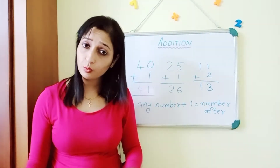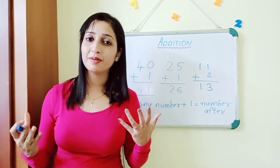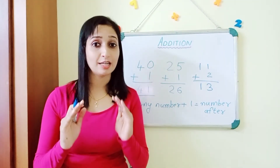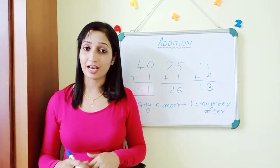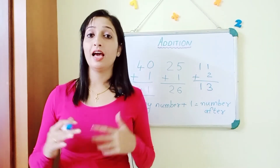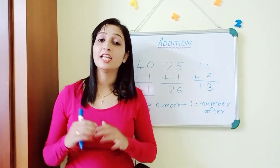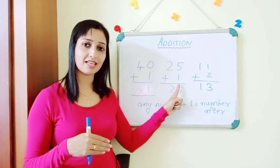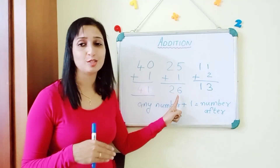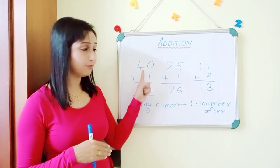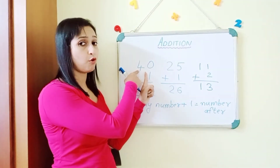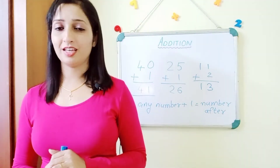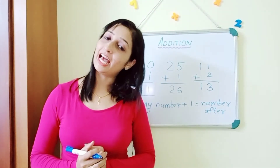Then we talked about addition with zero — any number added to zero is the number itself. Then addition with one — any number added with one is the number that comes after. For example, twenty-five plus one equals twenty-six, and forty plus one equals forty-one. That was all about addition. Bye, see you soon with another topic!